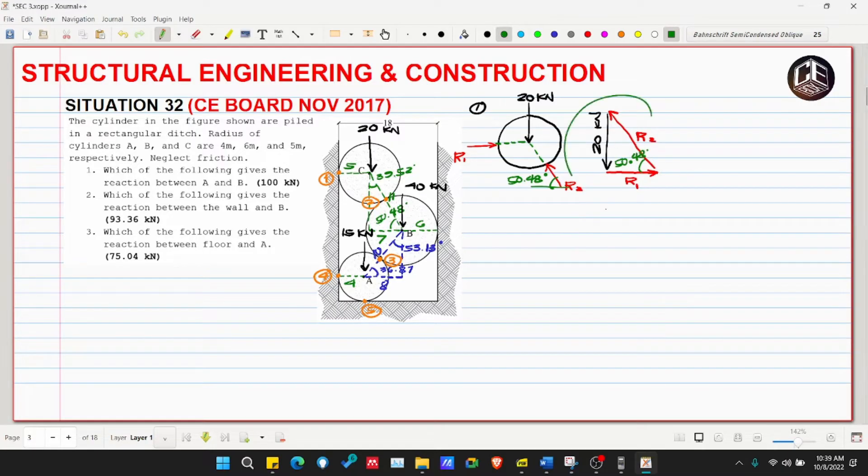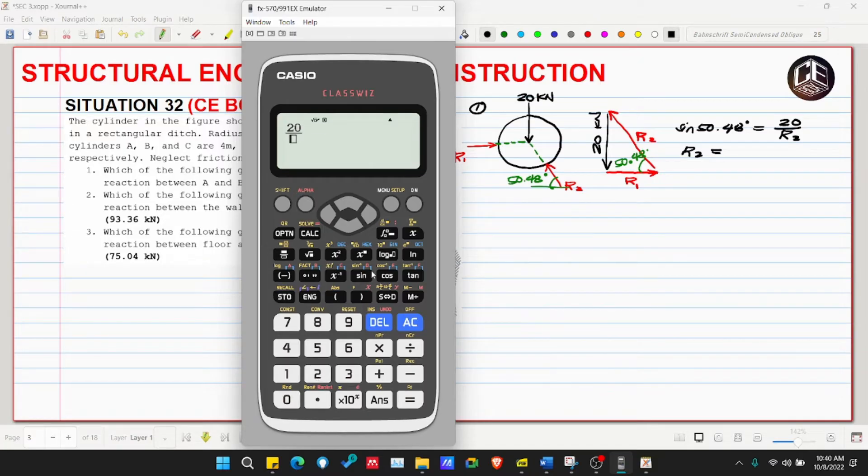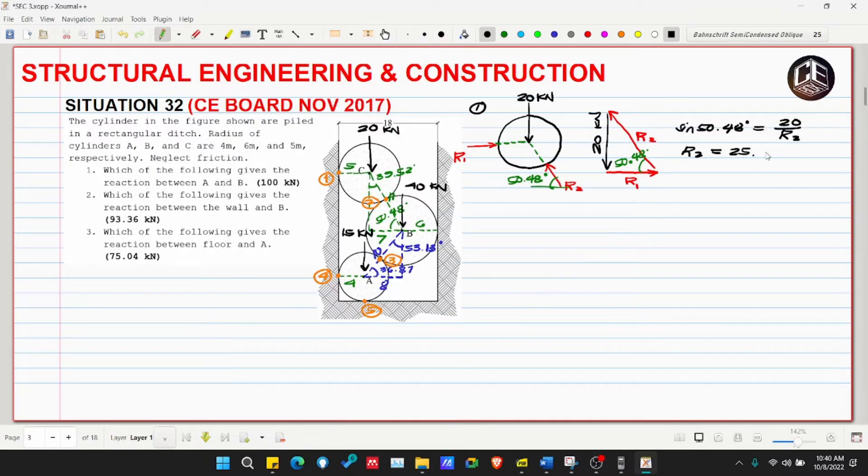What we need to do here is obvious, it's a right triangle. We need to use sine because this is opposite to 50 and this is the hypotenuse. We only need R2. So sine of 50.48 degrees is equivalent to opposite 20 over hypotenuse R2. Therefore, R2 is 20 over sine of 50.48, which equals 25.93 kilonewtons. We can now go to our cylinder B.